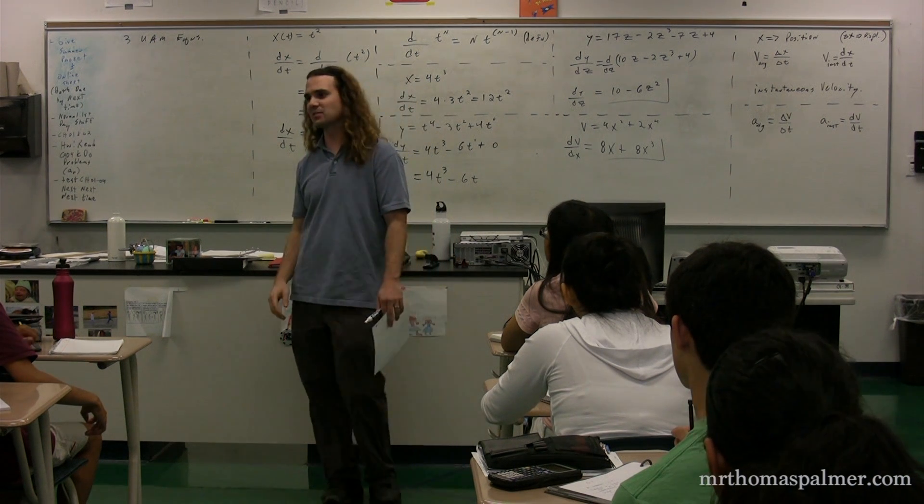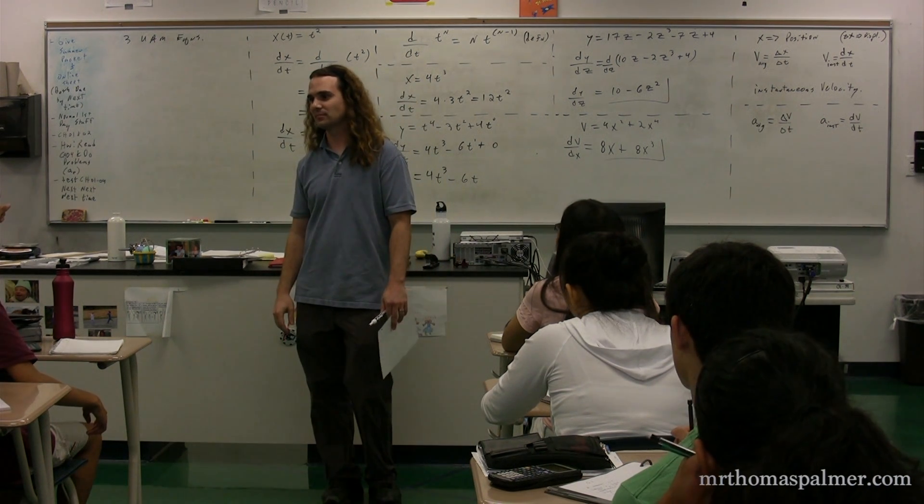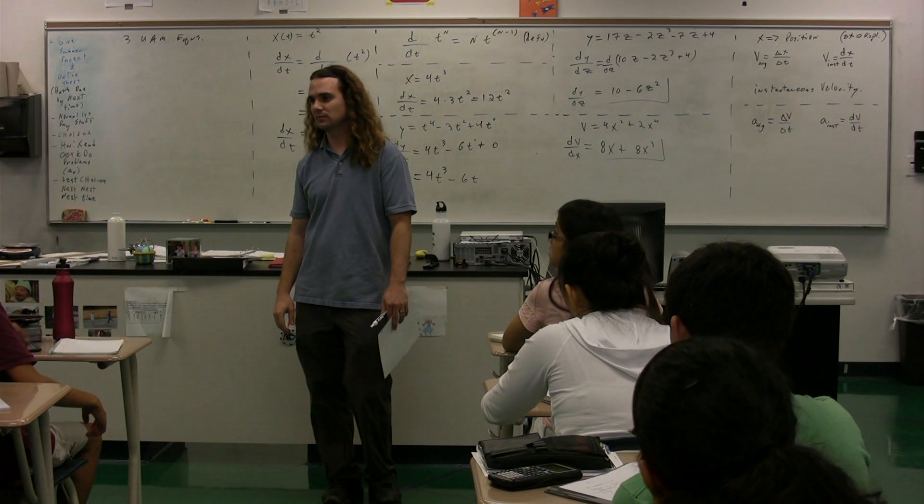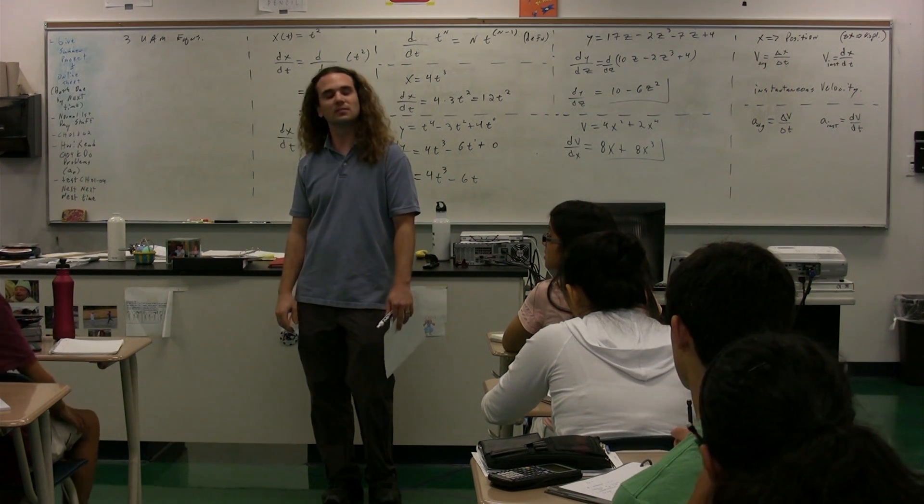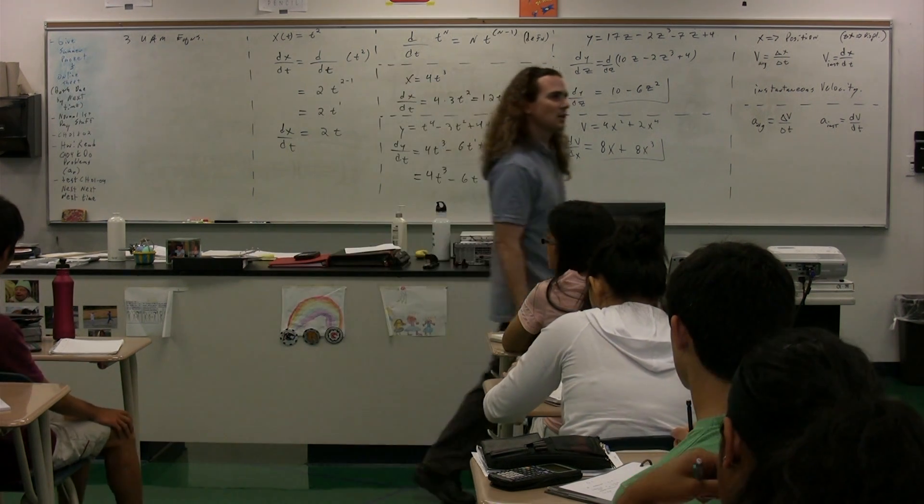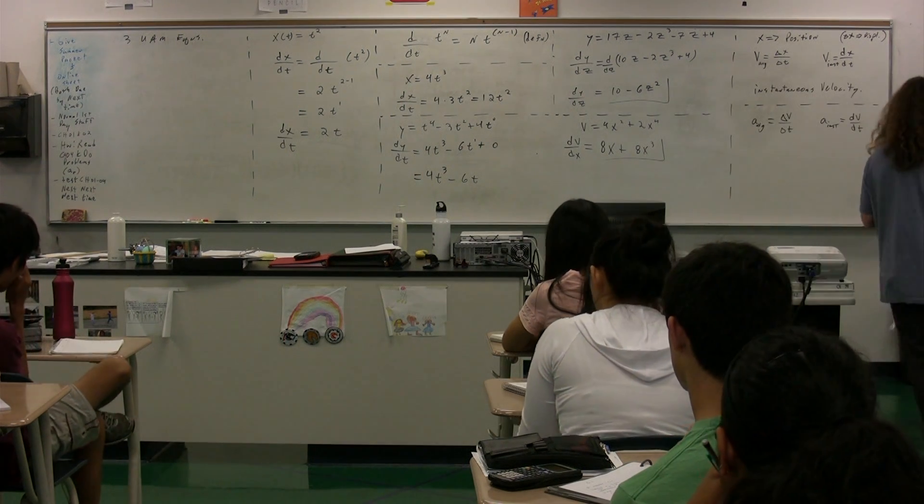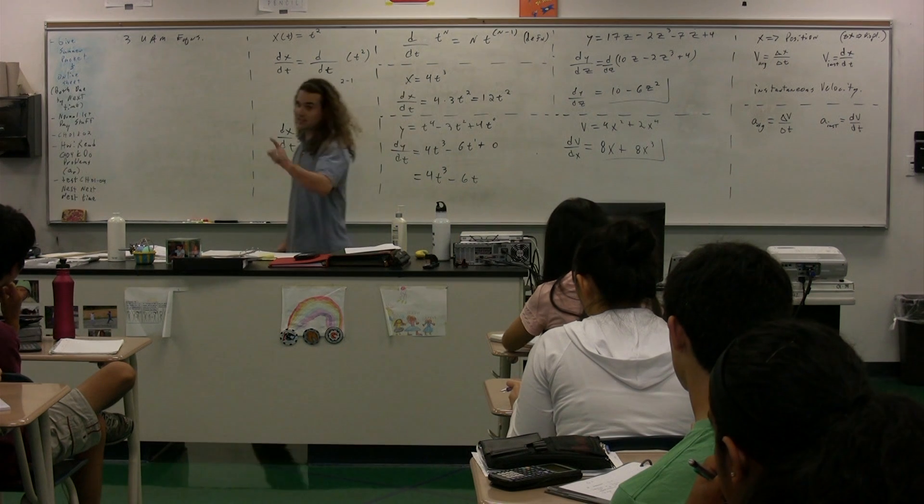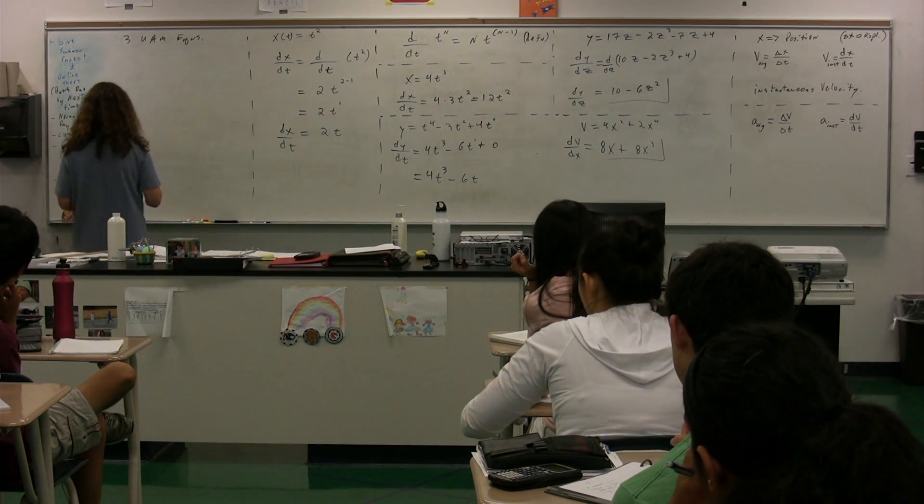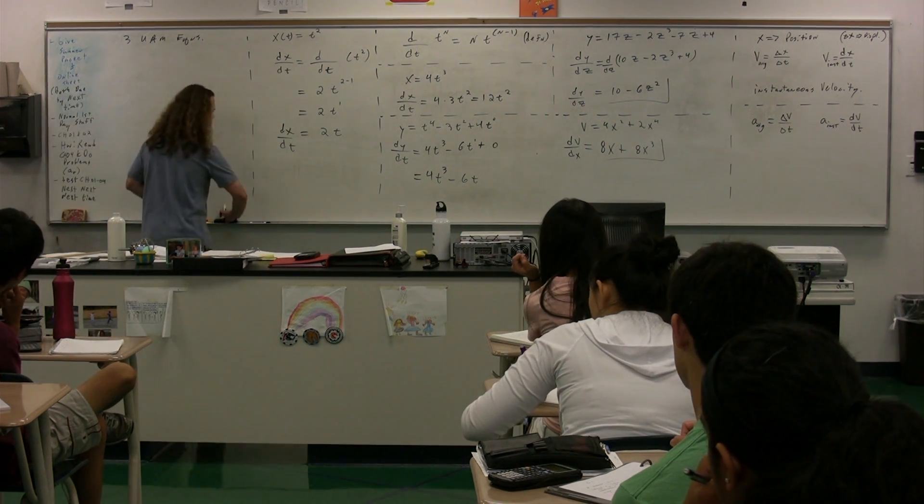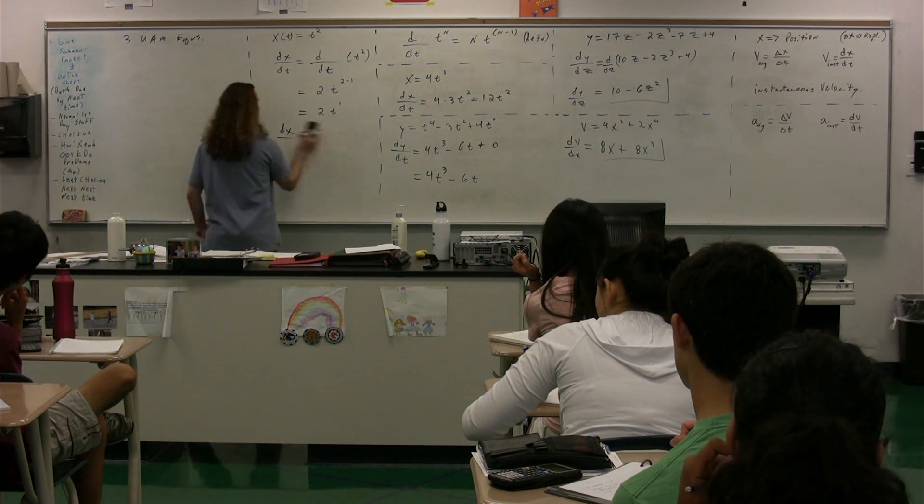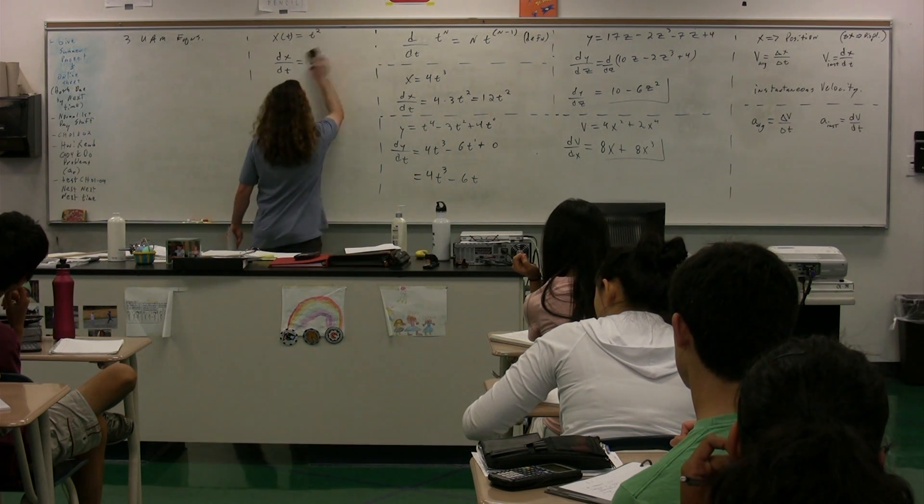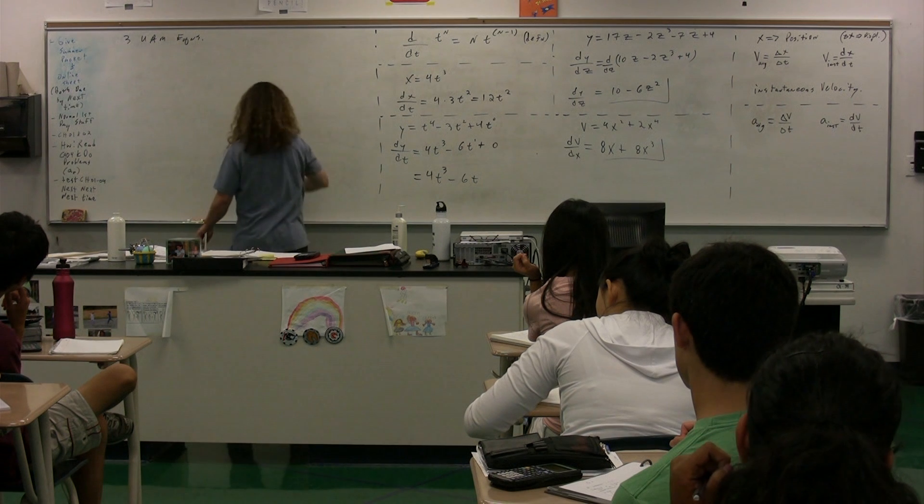There's always more than one solution. We'll get to that. So there are three UAM equations on your equation sheet, but they left one off. We're going to talk about which one that is, and there are subtle differences between the equations given on the equation sheet and those that we have learned in the past.